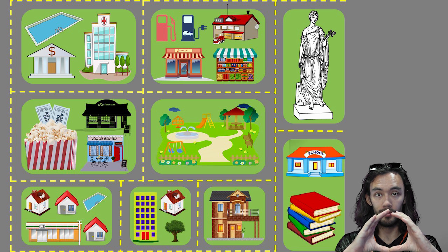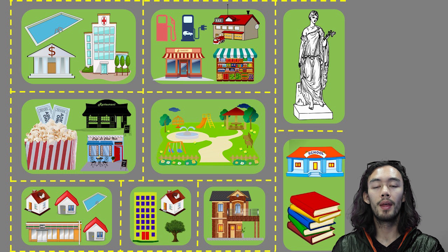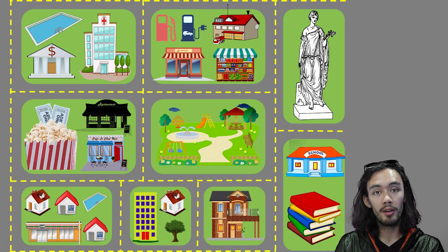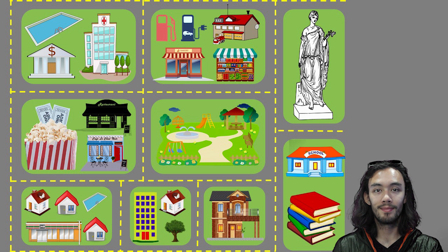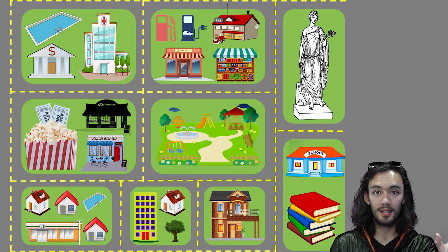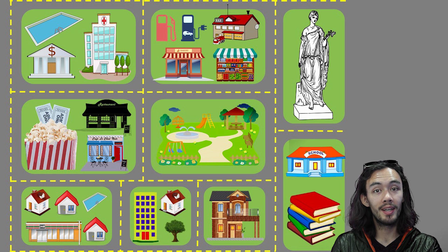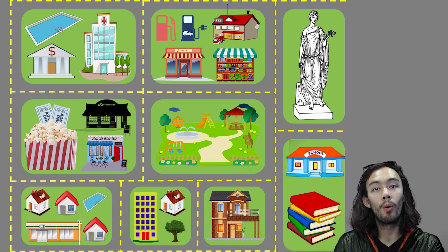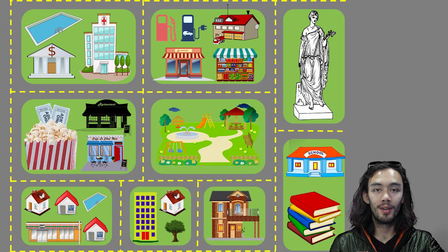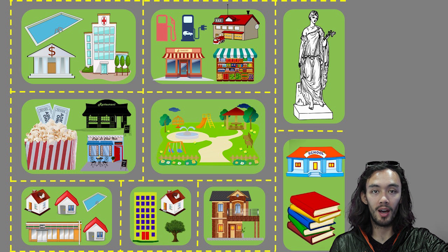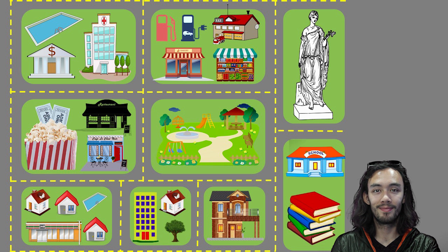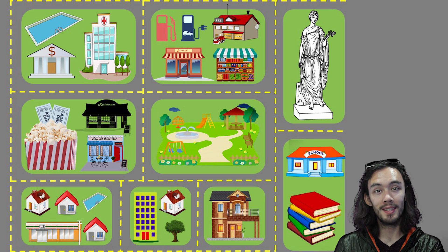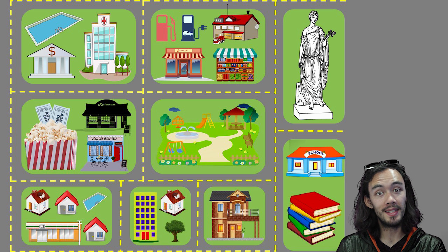Across in the block down here, we have an apartment building, a house, and a tree. Across from that we have a big fancy house or a mansion. And then next to it, across from the road, we have the school and the library. I hope that makes sense. Let's start with the listening activity.